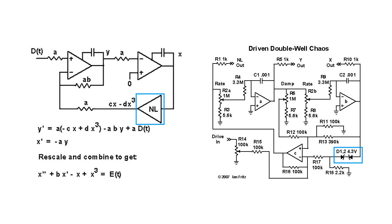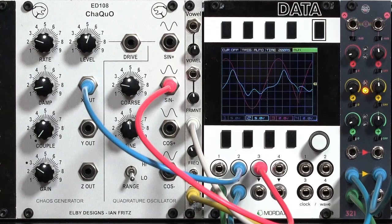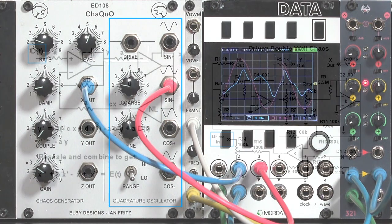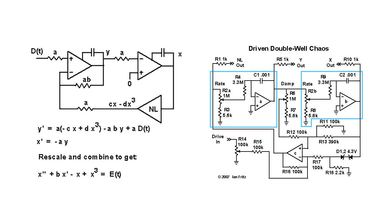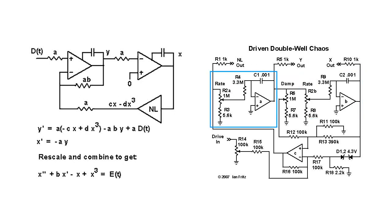Our quadrature oscillator is our input, or our drive part of the circuit. It's like feeding an oscillator into a normal two-pole low-pass filter. The rate is the equivalent of the cutoff of the filter — it's basically the slew amount of these integrators. The damp is the feedback amount from the first pole through the feedback circuitry.